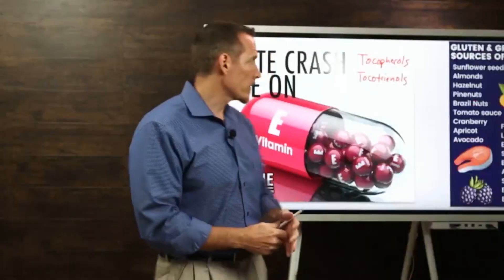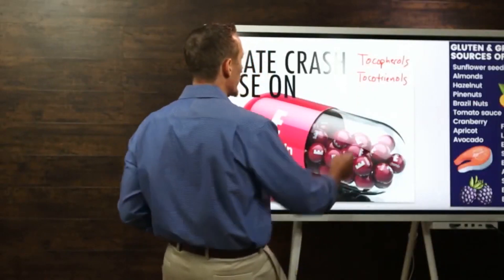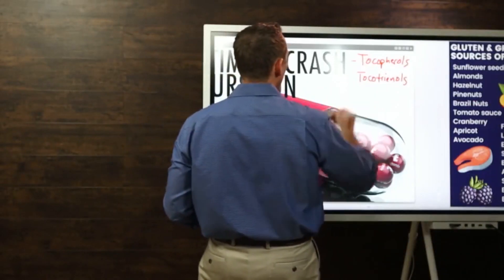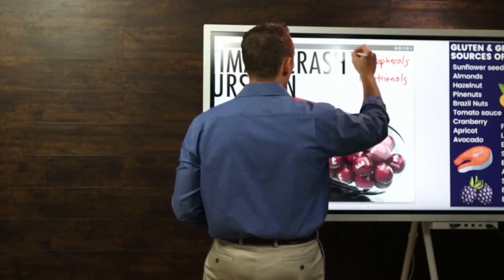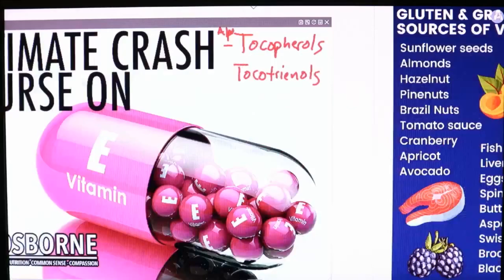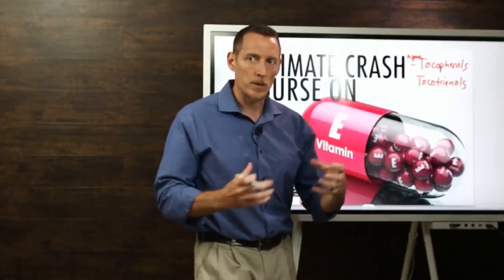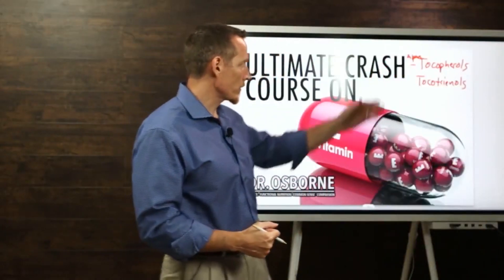Most people, when they're talking about vitamin E, are really referring to alpha-tocopherol. If you ever see that term on a supplement label, that's generally what they're referring to as vitamin E, although technically it's not the comprehensive, complete form of vitamin E.